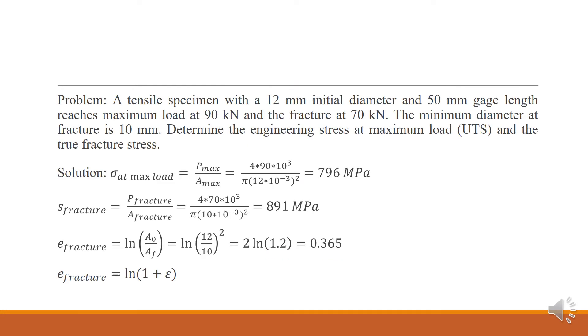A tensile specimen with a 12 mm initial diameter and 50 mm gauge length reaches maximum load at 90 kN and the fracture at 70 kN. The maximum diameter at fracture is 10 mm. Determine the engineering stress at maximum load, that is UTS, and the true fracture stress.